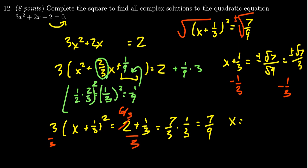We're going to get x equals. We have negative 1 third plus or minus root 7 over 3. So we'll just write this as negative 1 plus or minus the square root of 7 over 3. If you want to separate your answers into two pieces, negative 1 plus root 7 over 3 and negative 1 minus root 7 over 3, you can do that.